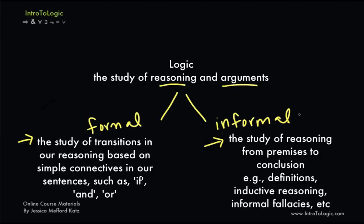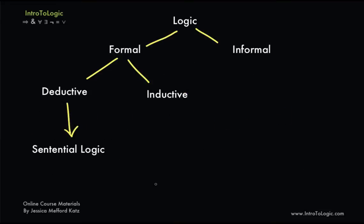In informal logic we do things like come up with definitions, we look at inductive reasoning, and various informal fallacies which are of course in contrast to formal fallacies. So as we proceed you'll get a feel for the difference between formal and informal logic, but we will be primarily focused with formal logic. We can further divide formal logic also. So under formal logic we'll be learning about both deductive and inductive arguments. Down here under deductive logic we have a specific kind of logic called sentential logic, and this is really what we're going to be focusing on in this class.